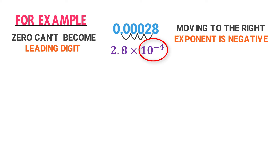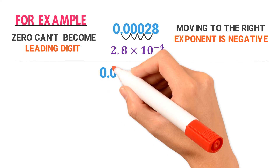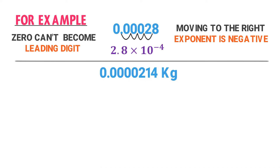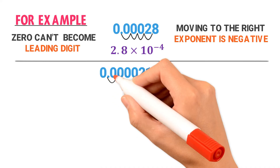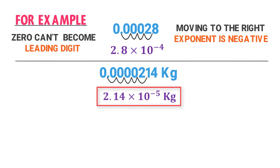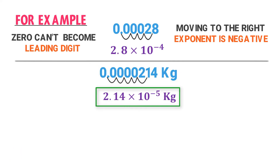Another example: the mass of an adult housefly is 0.00000214 kg. Express it in scientific notation. Move the decimal point to the right: one, two, three, four, five, six places, placing it after the leading digit 2. We get 2.14 × 10⁻⁶ kg. So the mass of an adult housefly, 0.00000214 kg, is written as 2.14 × 10⁻⁶ kg in scientific notation or standard form.